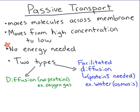In passive transport, like diffusion, the molecules are going to move from an area of high concentration to low concentration. With passive transport, there is no energy needed. Sometimes when we move big things across the cell membrane we need a lot of energy, but with passive transport that we're talking about today, no energy is required.